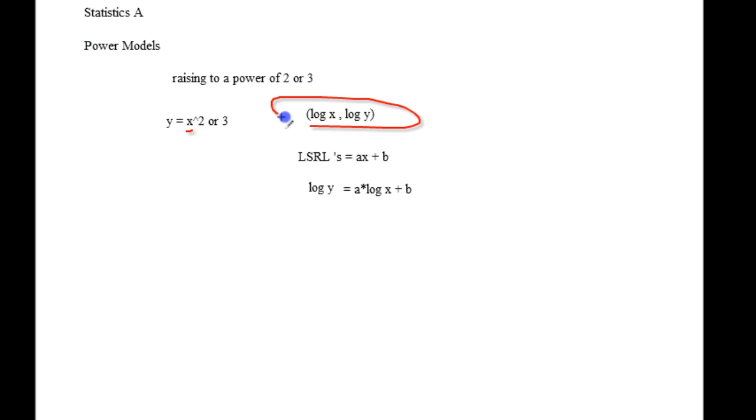Now in order to linearize, you're going to have to take the log of x and the log of y. So what's going to happen is your LSRL may look like this, but in actuality it's going to be the log of y equals a times the log of x plus b.